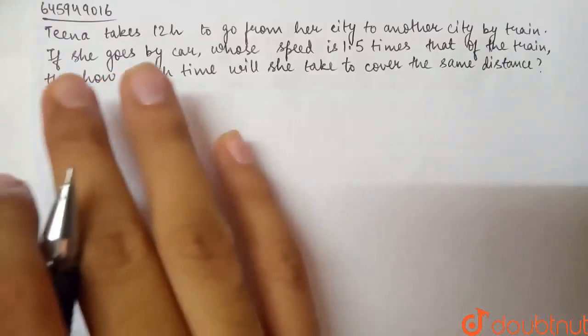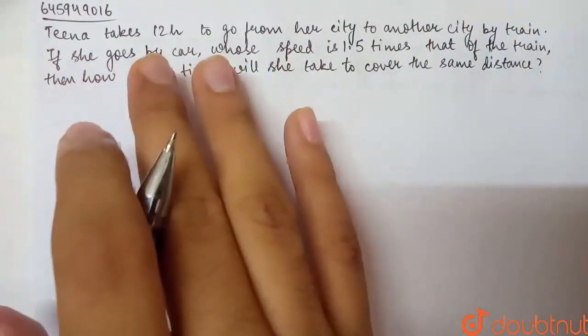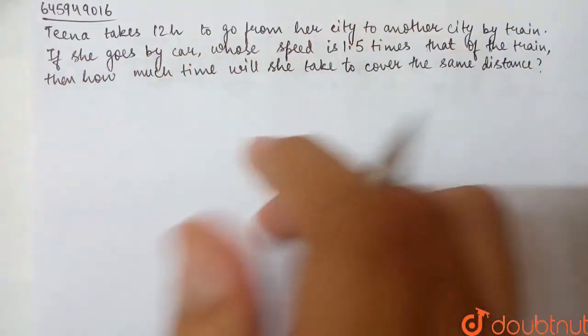This question says that Tina takes 12 hours to go from her city to another city by train. If she goes by car, whose speed is 1.5 times the speed of the train.